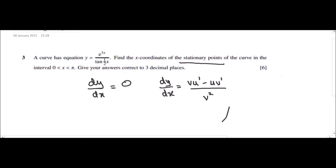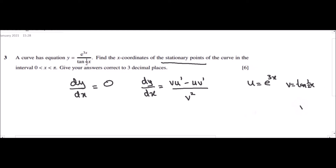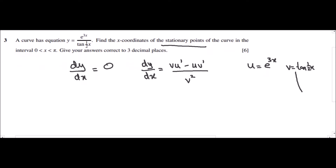In this case, our u is e^(3x) and our v is tan(½x). So u′ would be the derivative of e^(3x), which is 3e^(3x), and v′ would be the derivative of tan(½x), which is ½·sec²(½x).